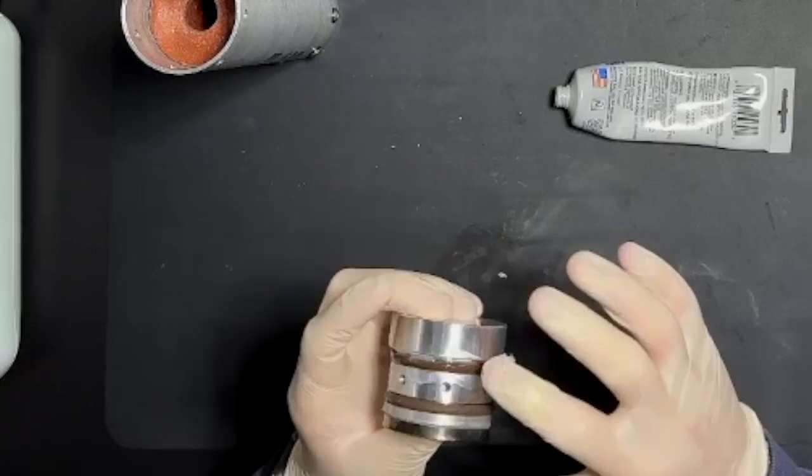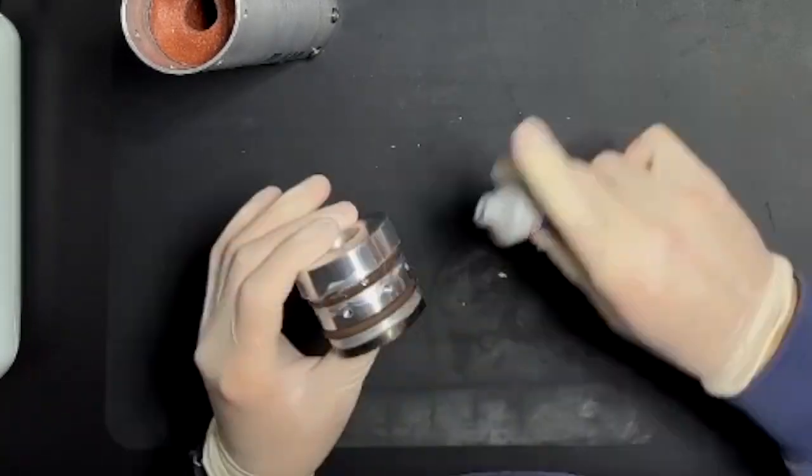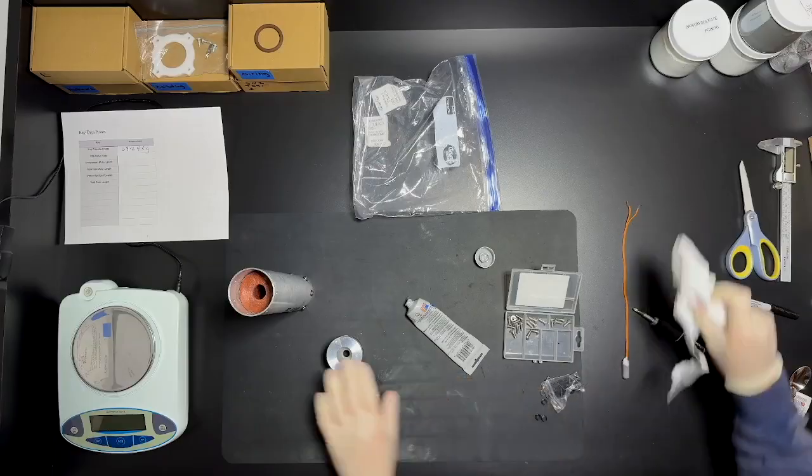Once the propellant is loaded, it's time to add the nozzle in. I do the same thing as the forward closure and I grease it all up.